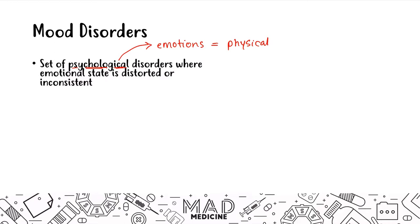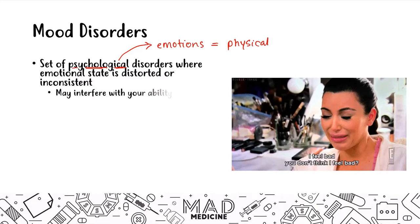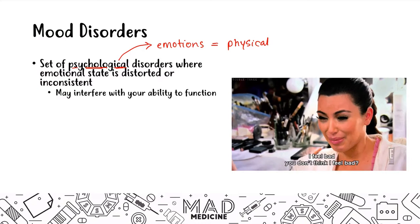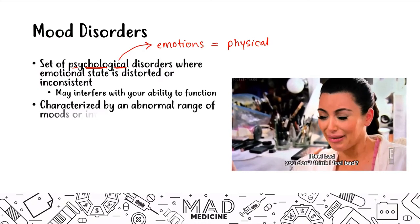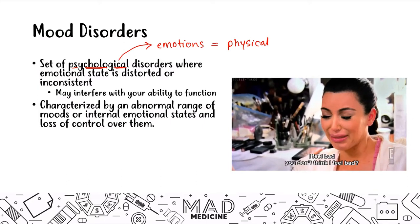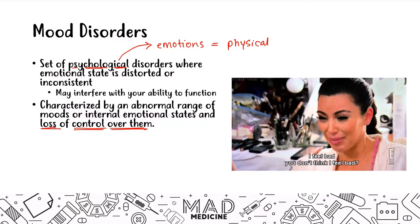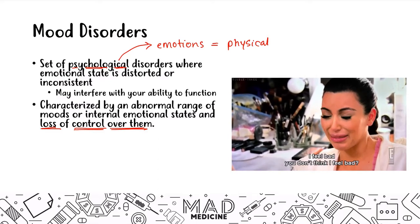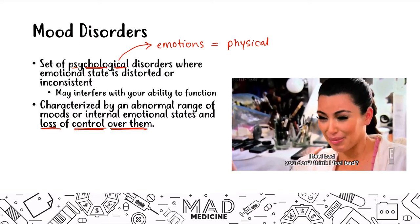That's why mood disorders are a disorder where emotions and physical health go hand in hand. Patients who suffer from mood disorders may have an interference with their ability to function properly — that's one of the hallmark things you'll see. It's characterized by an abnormal range of moods or internal emotional states and patients having loss of control over them. Patients with mood disorders will say that no matter what they try, they can't change the way they feel, whether it's playing basketball, going fishing, or woodworking — they just can't stop feeling upset, sad, or angry.